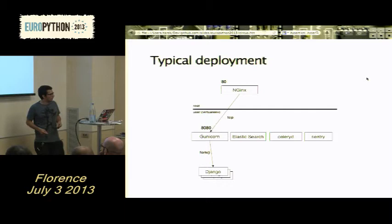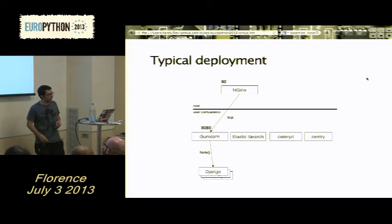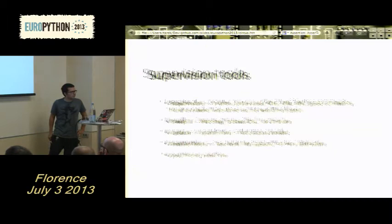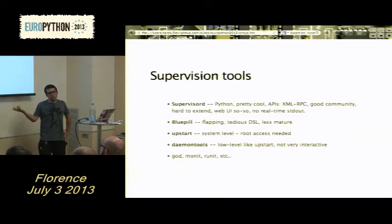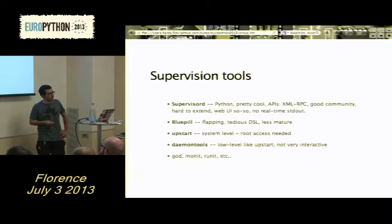If you're not a big company, it's often the case that all those little processes are running on a single box. So you have your web server with Gunicorn workers, an Elasticsearch server, a Redis process, and so on. That's the typical deployment, and of course you need to supervise it — make sure that every time something goes down, it comes back to life, and that you can add processes if your server can't cope with the load.